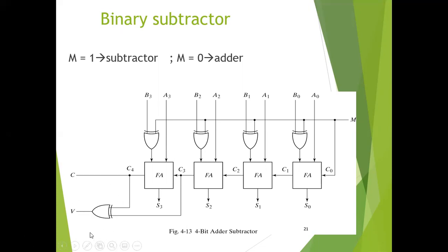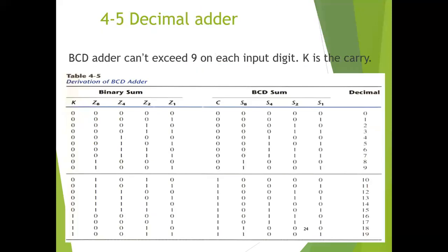So we understand that the V output is used to detect the overflow condition for the system. This was our lecture about binary adder-subtractor and what is the overflow condition and when it occurs. It only occurs when both binary numbers of the same sign are added — either both are positive or both are negative — and this V output indicates whether an overflow has occurred or not. In our next lecture we will study about decimal adders, how they work, and how we can implement them using block diagrams and digital circuits. Okay students, take care.